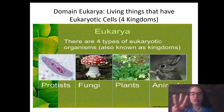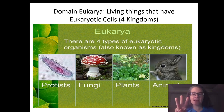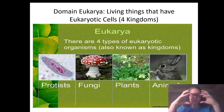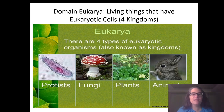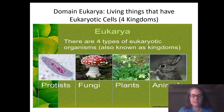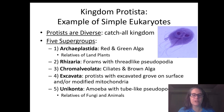If we look at our third domain, we have domain Eukarya. From our classification system, domains are separated into kingdoms, and domain Eukarya is separated into four kingdoms: Protista, Fungi, Plantae, and Animalia. I want to talk through the differences between these particular groups.